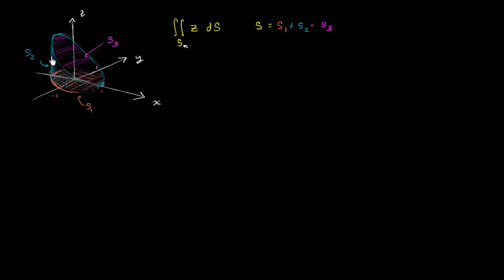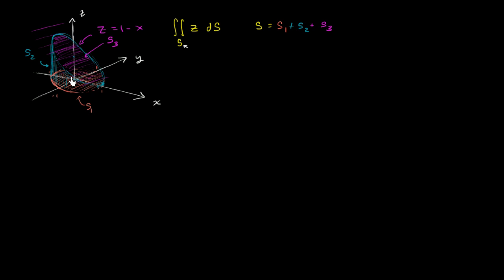The second surface, shown in blue, is kind of like the side of a cylinder, but the cylinder has been cut by a plane up here. The plane that cuts it is the plane z equals 1 minus x. Obviously the plane itself goes well beyond the shape, but where that plane cuts the cylinder defines this shape.